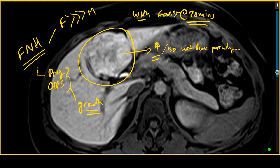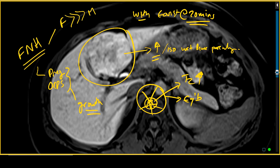On pathology, FNH manifests as a mass with a central scar with radiating septations. That central scar is the portion that was T2 hyper-intense and that enhanced late on the equilibrium phase. When I look at a lesion and it sort of looks like an orange cut open in cross-section, I think this could reflect focal nodular hyperplasia.